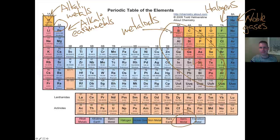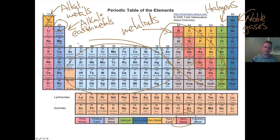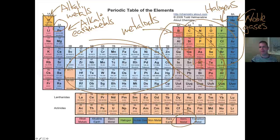Those are located here on this little staircase. They have properties that are similar to both metals and non-metals. Metals are found primarily on the left side of the periodic table. Non-metals are found on the right side of the periodic table.